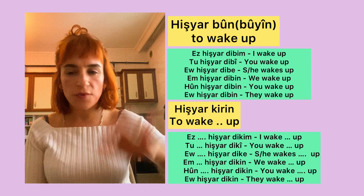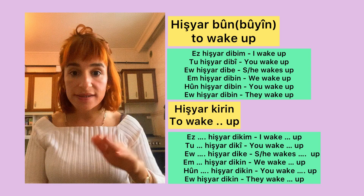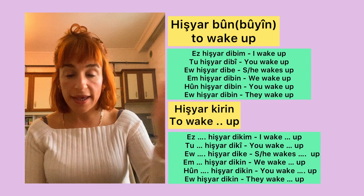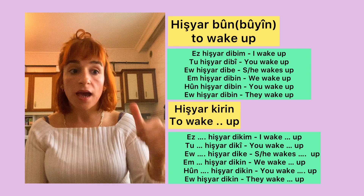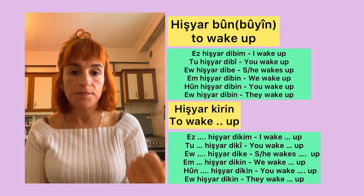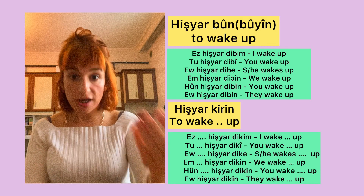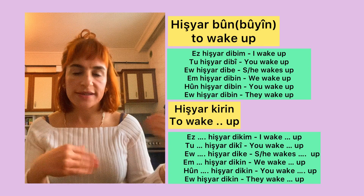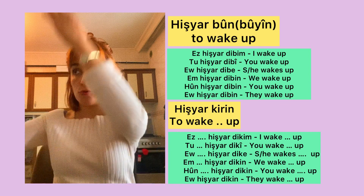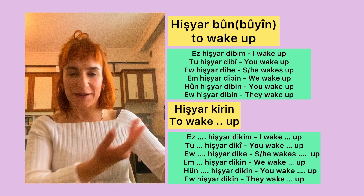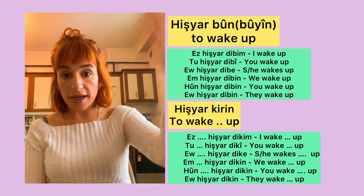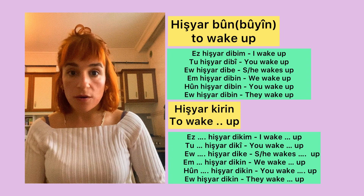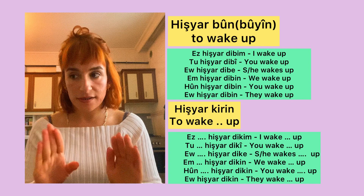For 'hushiar karen' in the present form: 'hushiar de kom' — I wake someone up. For example, 'I wake you up' is 'ez hushiar de kom'. Then: 'hushiar de kî', 'hushiar de kê', 'hushiar de kin'. We wake you up. They wake you up. In the present it's very easy to conjugate.